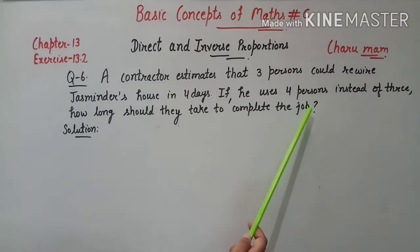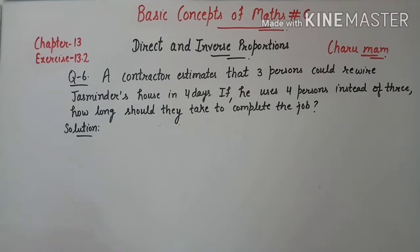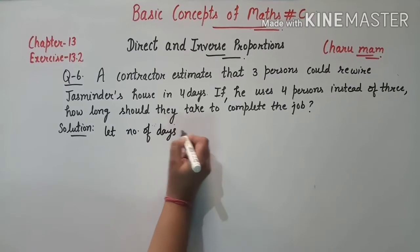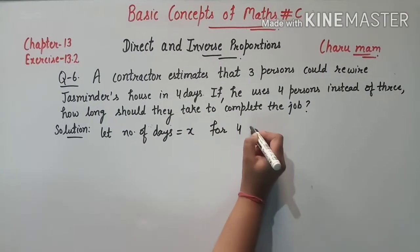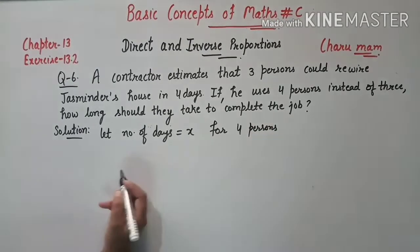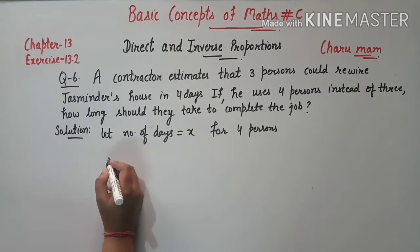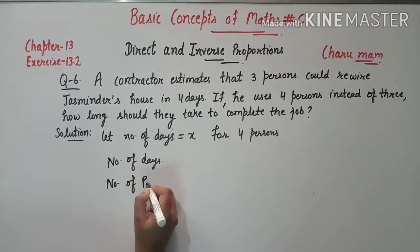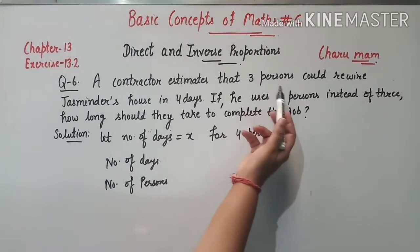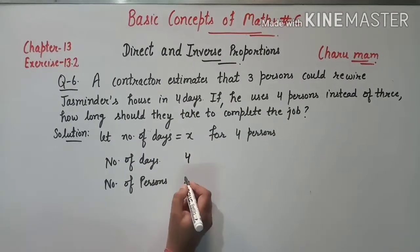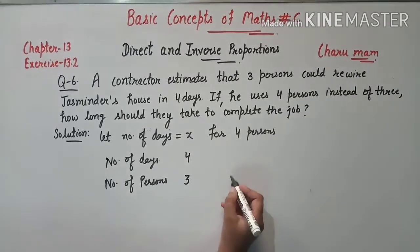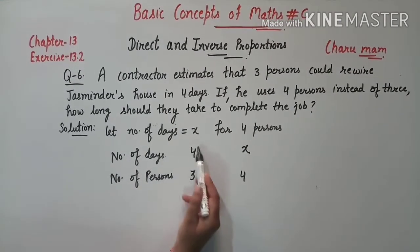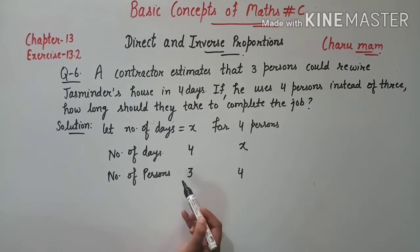We start the solution. हम let करेंगे number of days which is x, and this is for 4 persons. अब हम table form करेंगे जिसमें number of days and number of persons लिखेंगे। Given है: 3 persons, 4 days में complete कर रहे हैं — number of days 4 है और persons 3। अगर 4 persons हैं तो number of days let की है x।